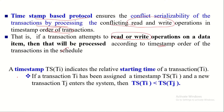Let us now discuss what is a timestamp. A timestamp of a transaction indicates the relative starting time of the transaction. That is, whenever a transaction enters into the system for execution, immediately a timestamp will be allocated for that transaction indicating the time when it entered into the system. Usually, a timestamp for a transaction can be allocated in two ways: one is using system clock, another one using logical counter.